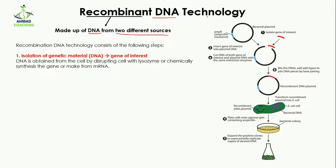There are different steps involved in recombinant DNA technology. The first step is the isolation of genetic material. We isolate the genetic material so that we can get our gene of interest. The gene of interest is the gene which you wanted to study — for example, if you wanted to study insulin, you would isolate DNA from human cells.